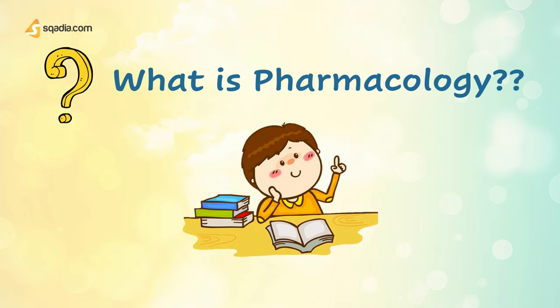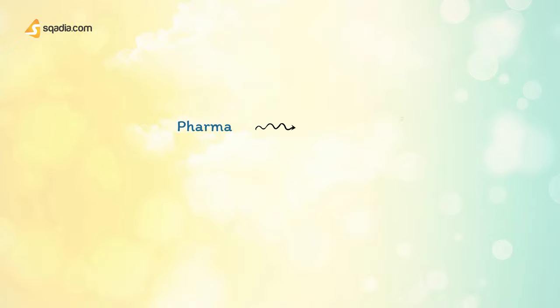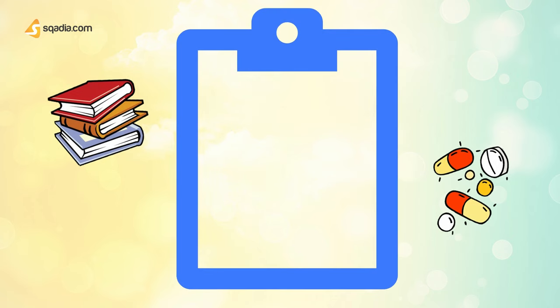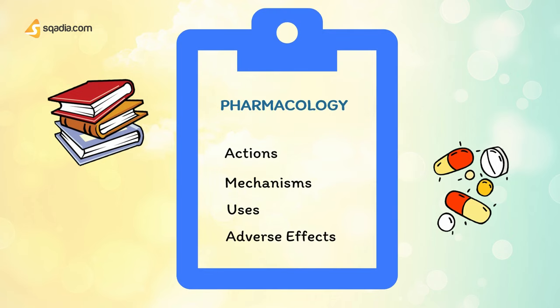So, what is pharmacology? Let us divide the word first. Pharma means medicine and logos means study. Pharmacology is the study of the actions, mechanisms, uses, and adverse effects of drugs. But that will be too simple of a definition, so we'll be discussing it further in detail.